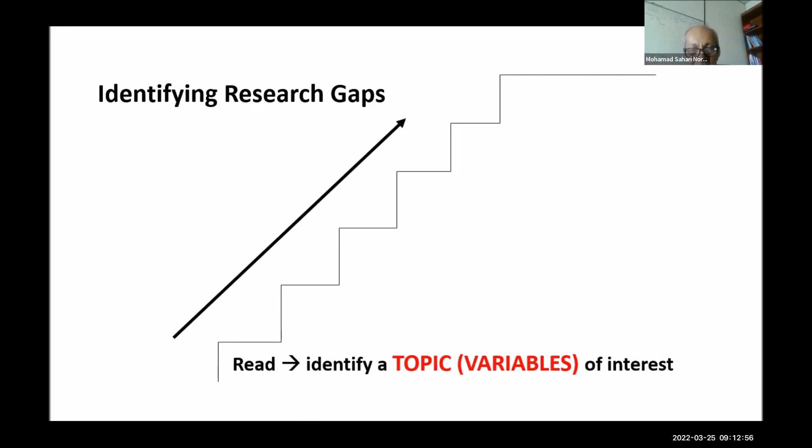Identify topic or be more focused on variables. Because once students tell us about their topic, it can be too many things there. Even causal links can be stated in the topic. Try to direct them to the most important variable. That's the starting point, to me, the starting point of identifying research gaps. So they have to read.